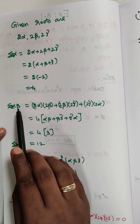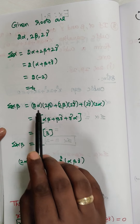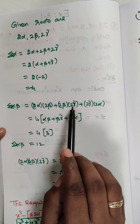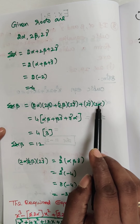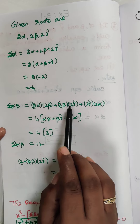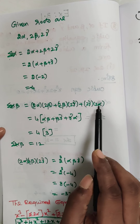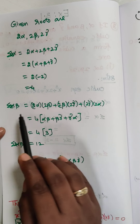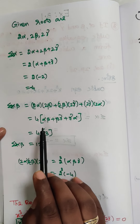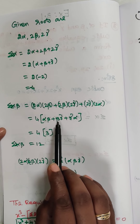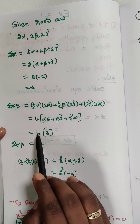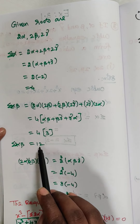Summation 2α·2β equals 2α·2β + 2β·2γ + 2γ·2α. Each pair gives 4, so taking 4 outside we get 4 × (αβ + βγ + γα). We already know alpha·beta + beta·gamma + gamma·alpha equals 3, so 4 × 3 equals 12. Summation 2α·2β equals 12.